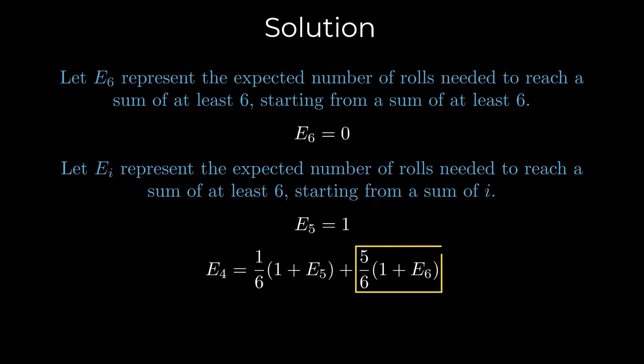Similarly, this term corresponds to the case where the current roll results in a value other than one. This happens with a probability five by six, and again, the plus one accounts for the current roll. Using the previously calculated values, this evaluates to seven by six.